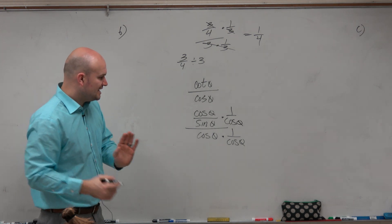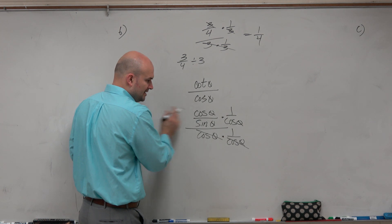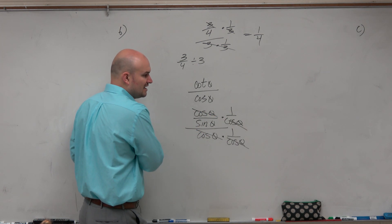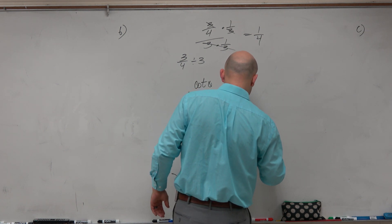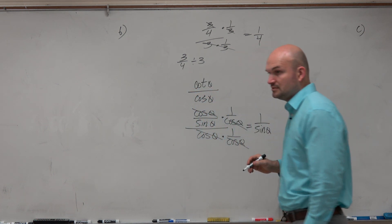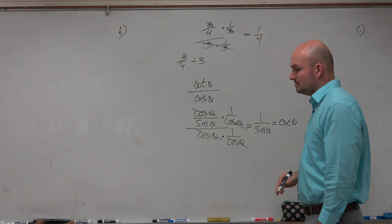Because when I write it like this, I can explicitly see that the cosine is being divided out in the denominator, and the cosine is being divided out in the numerator. And that's just leaving me with 1 over sine of theta, which is just equal to cosecant of theta.